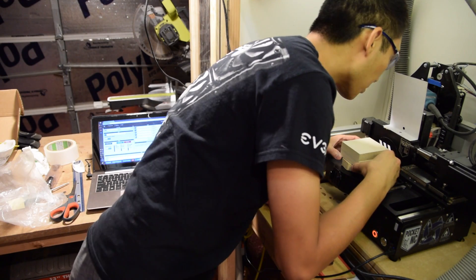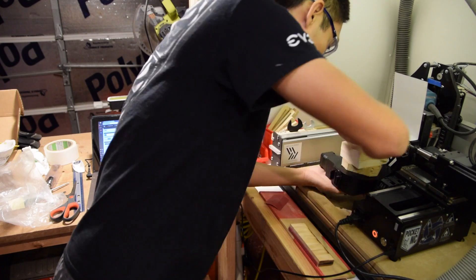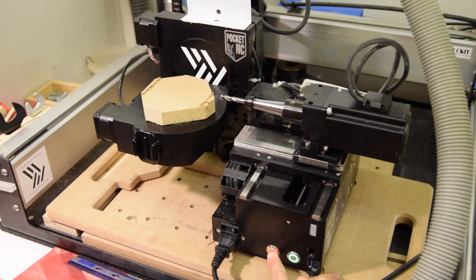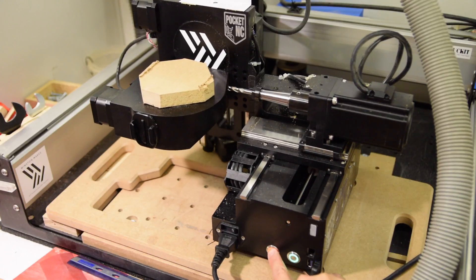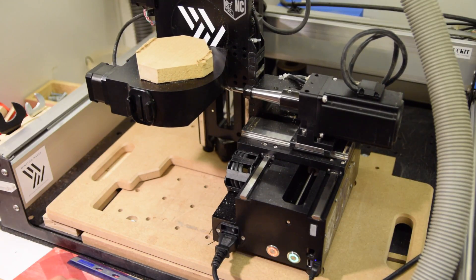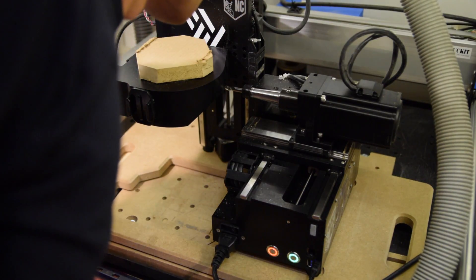Adhesive workholding probably seems a little odd on a 5 axis machine, but this is just like any other CNC woodworking project as far as I'm concerned. Since my stock was 1.5 inches thick, I needed at least that much stick out from my tool holder, preferably a couple millimeters extra to ensure the collet nut wouldn't crash into the stock.